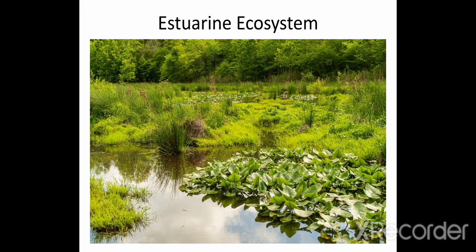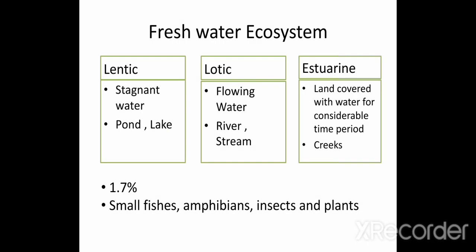Estuarine ecosystem is also called wetland ecosystem because this ecosystem is occupied by land which is saturated with water for a considerable period of time. Freshwater ecosystem covers 1.7 percent of Earth's surface. It consists of small fishes, amphibians, a variety of insects and plants.